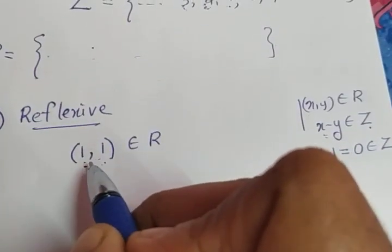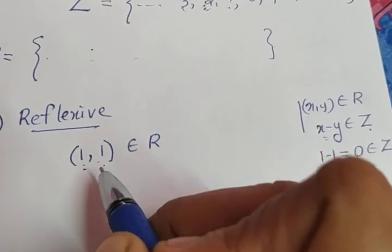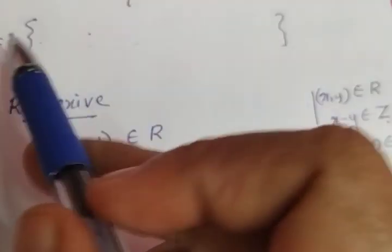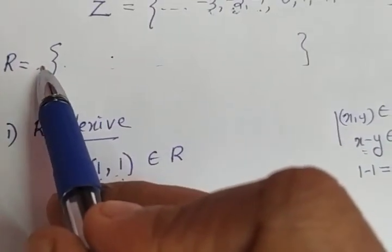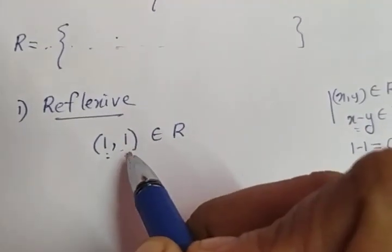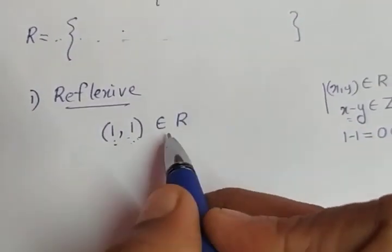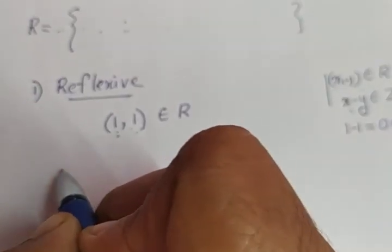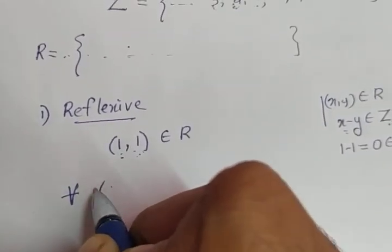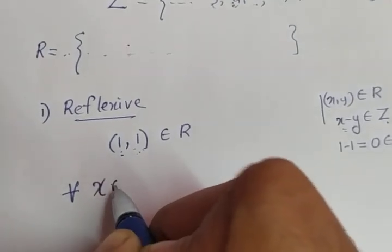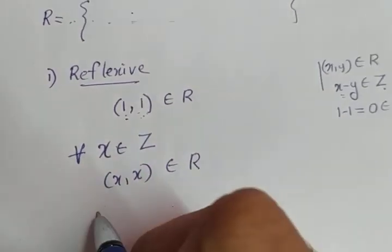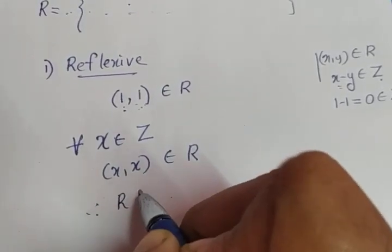It is true for (2,2), (3,3), (minus 1, minus 1), (5,5), (7,7), (100,100) - for all elements. The conclusion is R is reflexive. This is not an empty set; there are many elements. Since we have to write reflexive formally, we write: for every x element of Z, (x,x) element of R. Therefore, R is reflexive.